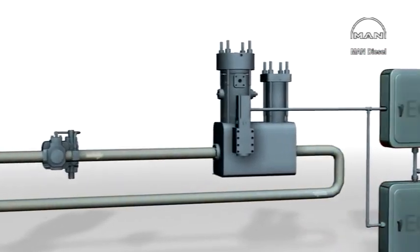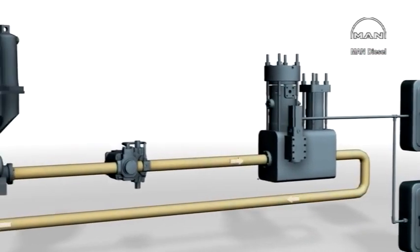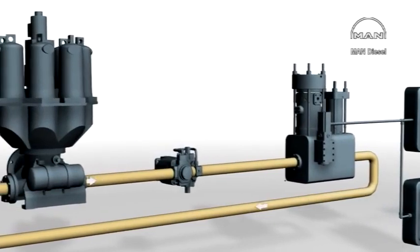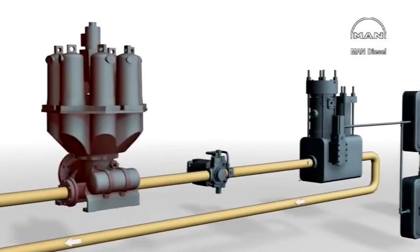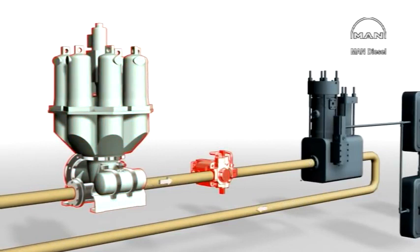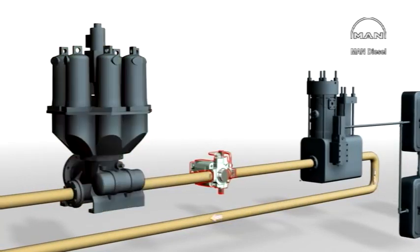In the hydraulic system, normal lubricating oil is used as the operating medium. It's filtered and pressurized by a hydraulic power supply unit.